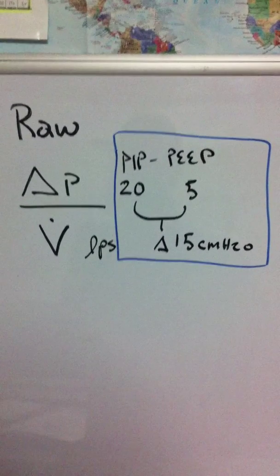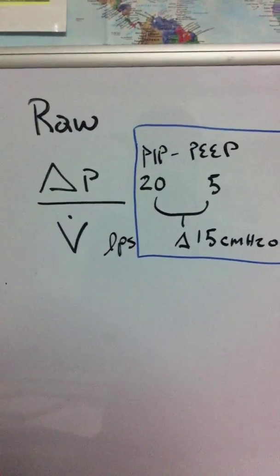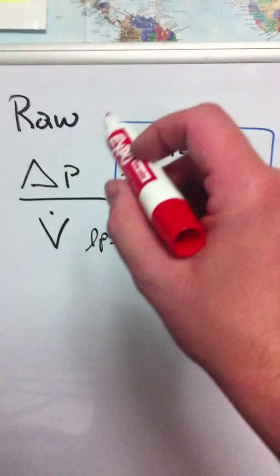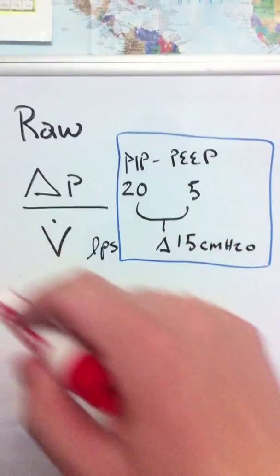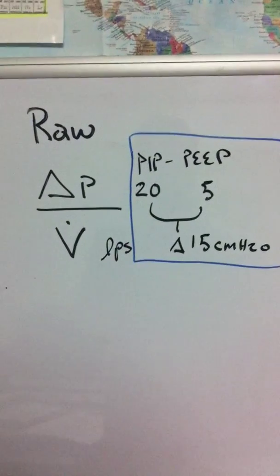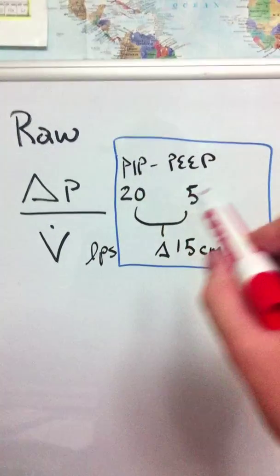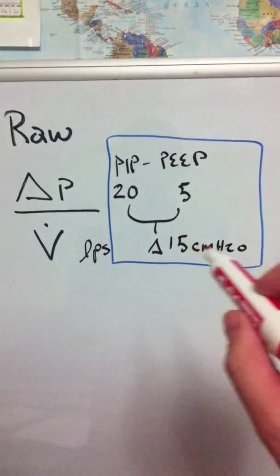So when I talked about the raw, sometimes that's the PIP subtract the PEEP when you're looking at calculating your raw. The difference between the 20 and the 5, so 20 subtract 5 is 15.